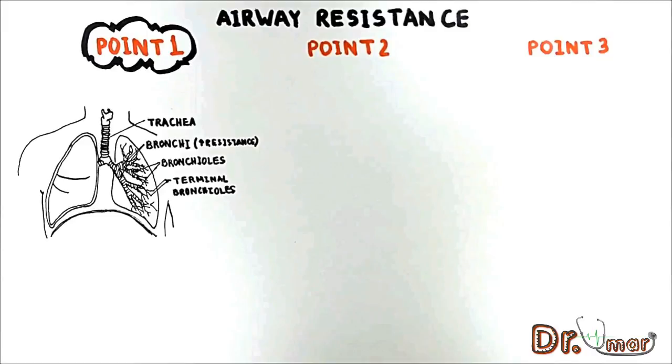The bronchiole is a very high resistant tube because it is narrow, but these tubes branch so many times and so often that as a unit, bronchioles are a very low resistant pathway.